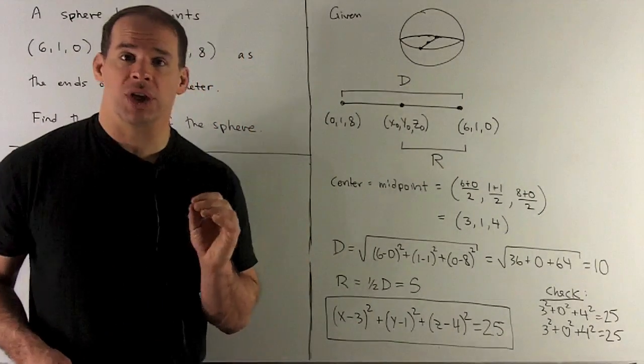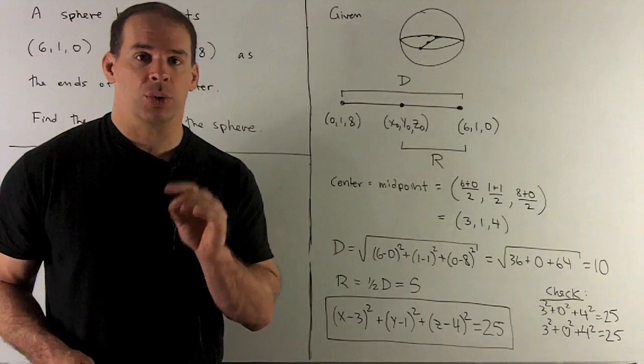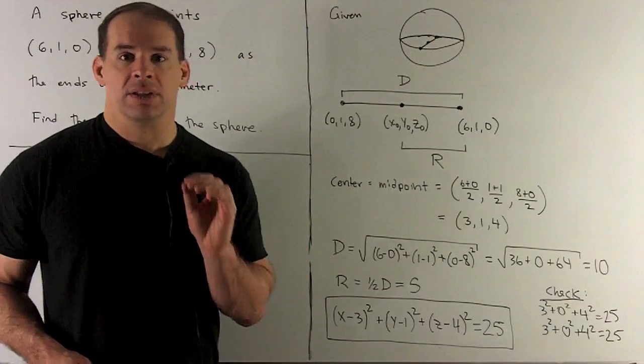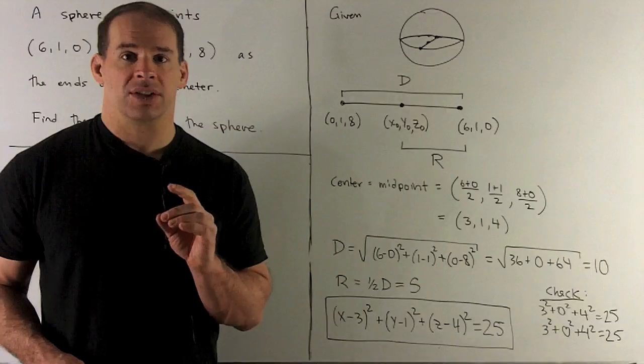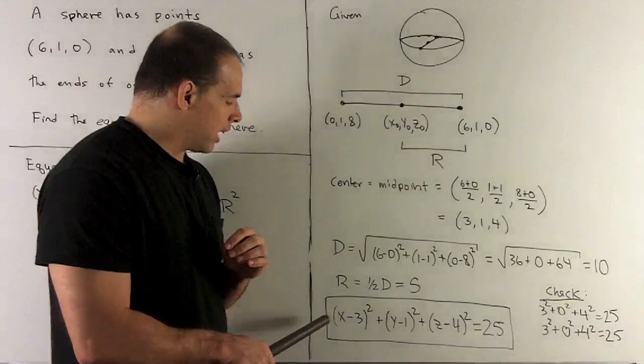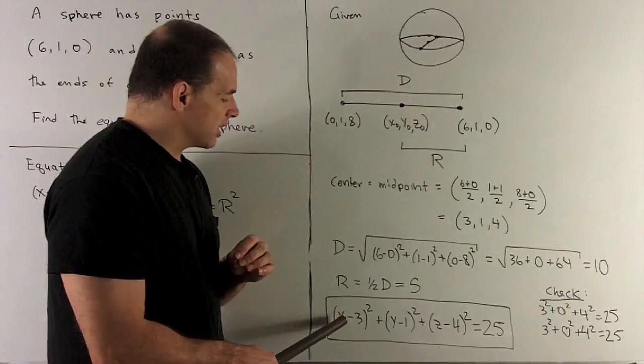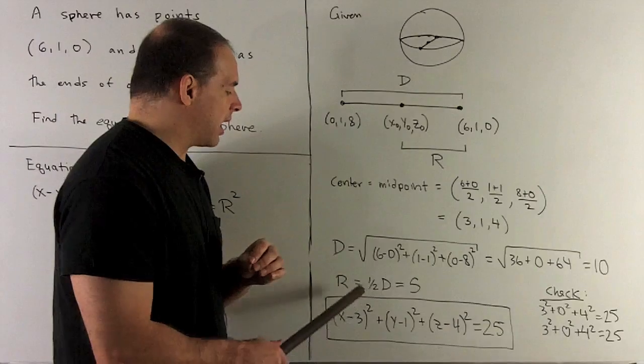Of course, we want to check our work. So we'll take our two original points, put them into the equation, see if they satisfy it or not. Now, if I take (6, 1, 0), what will happen? Here, we'll get 6 - 3 is 3, I square it, I get 9.